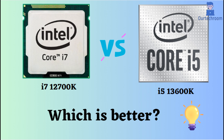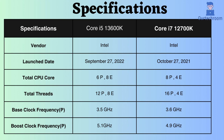In this video, I will compare the Intel Core i5-13600K and Intel Core i7-12700K, highlighting their differences, and then provide a conclusion to help you determine which one is the better choice. Both of these are powerful Intel processors and they have their own strengths as well as weaknesses. So let's look at them.